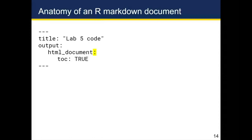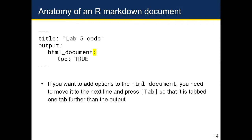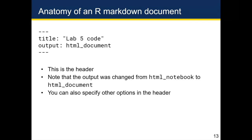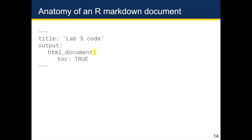If you're going to specify other options, there are a couple of important formatting requirements. First, you have to move HTML document to the next line and press tab so it's tabbed one level past the output field. Next, you have to add a colon after HTML document. If you want to add global options to the R Markdown document, you need that colon, and any options modifying the document must be tabbed once further.